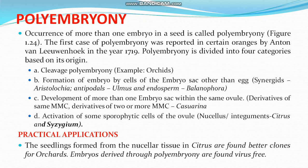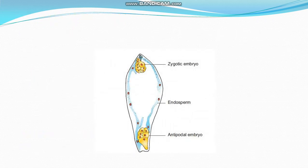Practical applications of polyembryony: seedlings formed from nucellar tissue in Citrus are found to be better clones. For orchids, embryos derived through polyembryony are found to be virus-free. The diagram shows polyembryony — the zygote contains one embryo and the antipodal cell also contains an embryo, showing the occurrence of more than one embryo in one embryo sac.